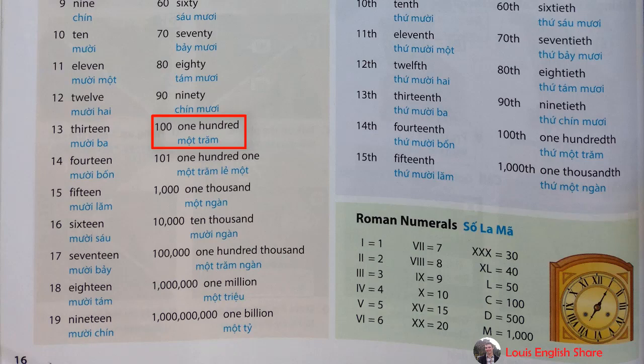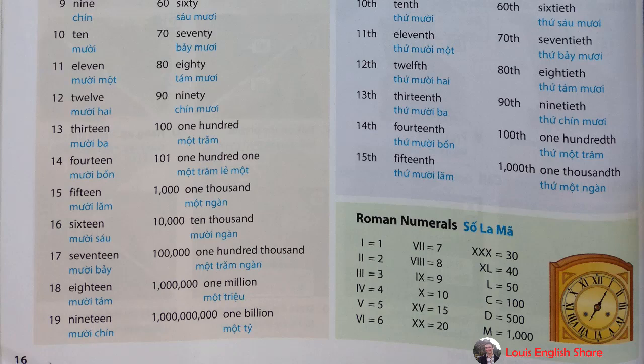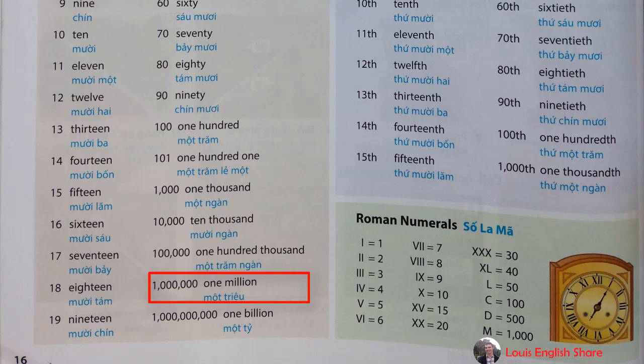Ninety. One hundred. One hundred and one. One thousand. Ten thousand. One hundred thousand. One million. One billion.